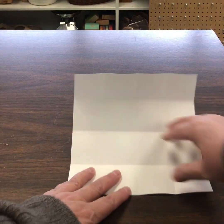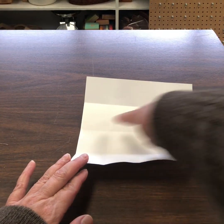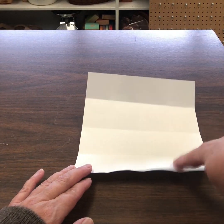So now you should have 16 squares, 1, 2, 3, 4, 5, 6, 7, 8, 9, 10, 11, 12, 13, 14, 15, 16.